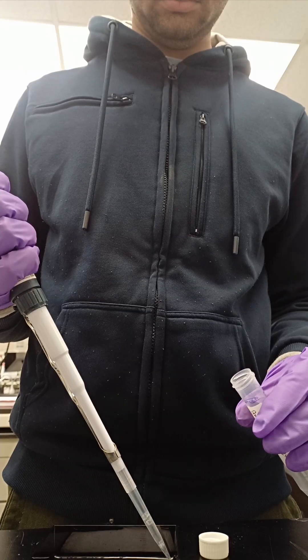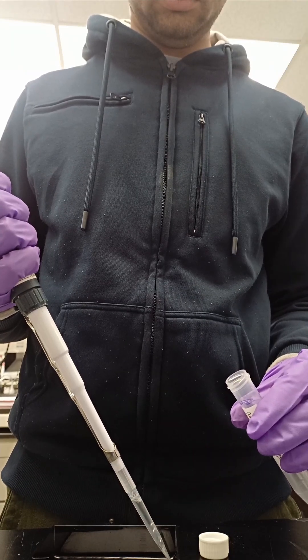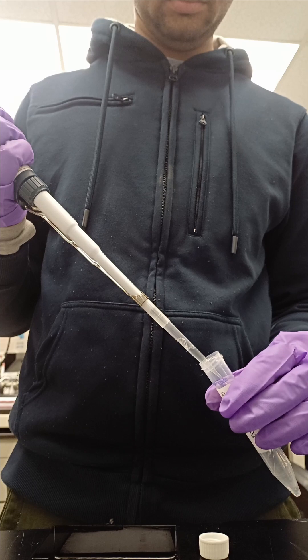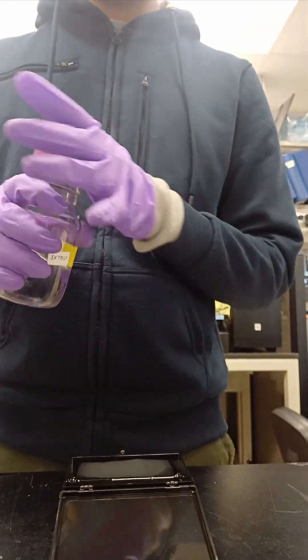Then wash with TBST and incubate with secondary antibody. It should be specific to the host of your primary. In my case, it's an anti-mouse secondary antibody. Repeat the washing step.